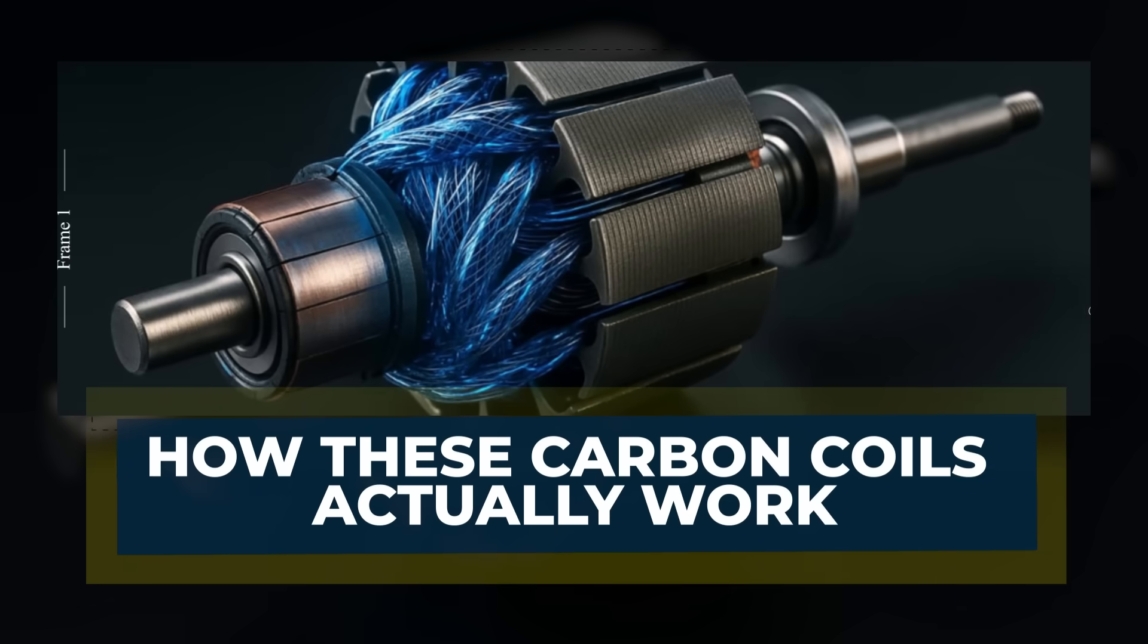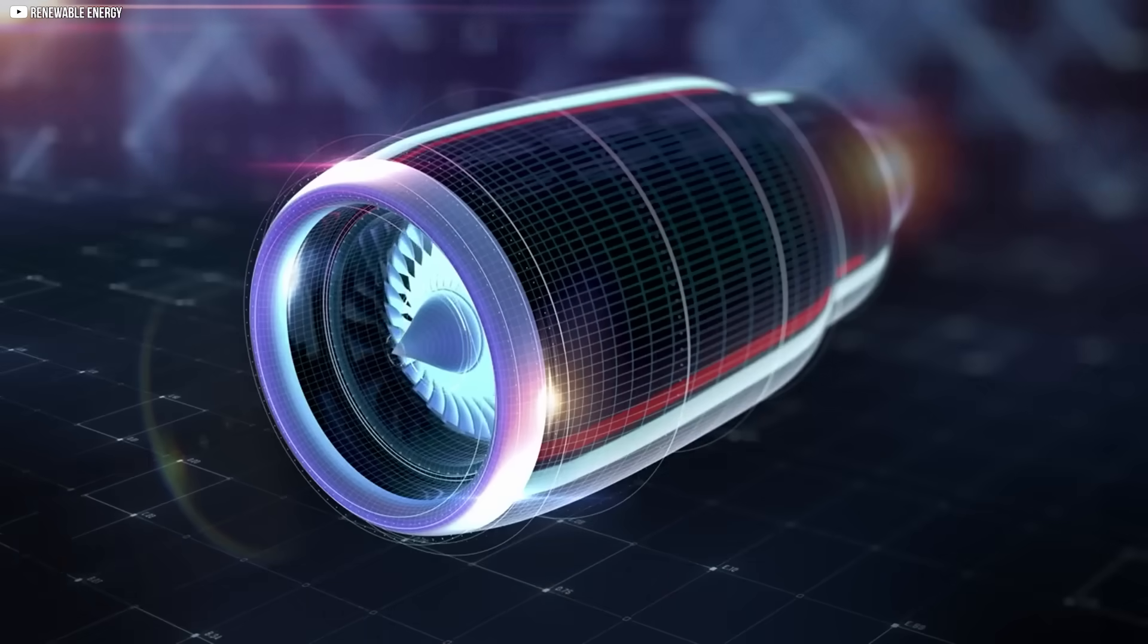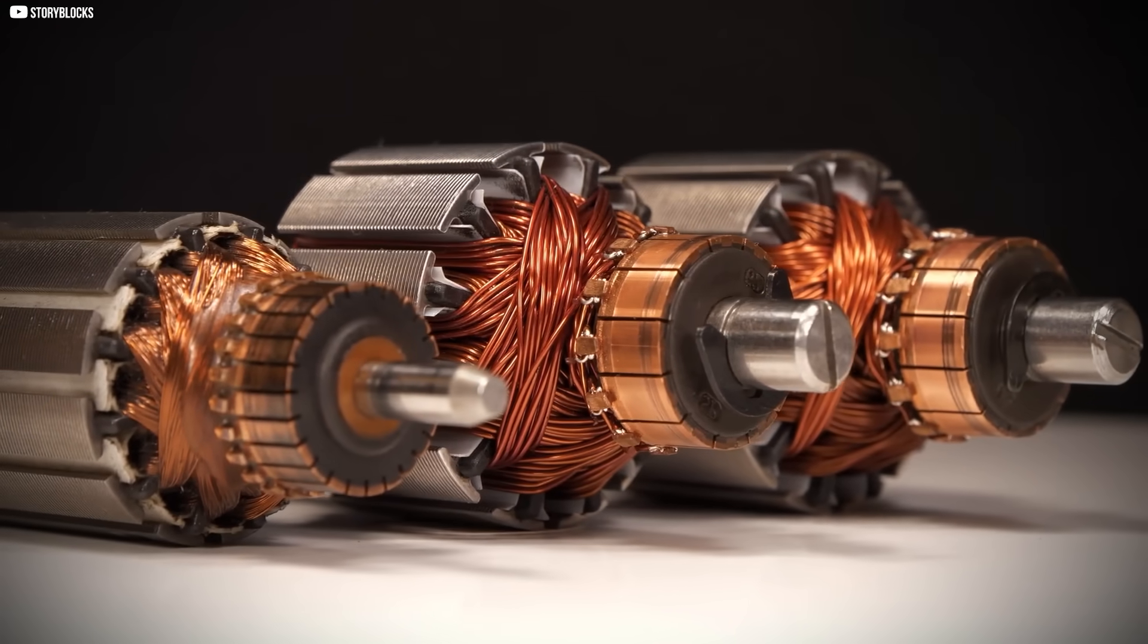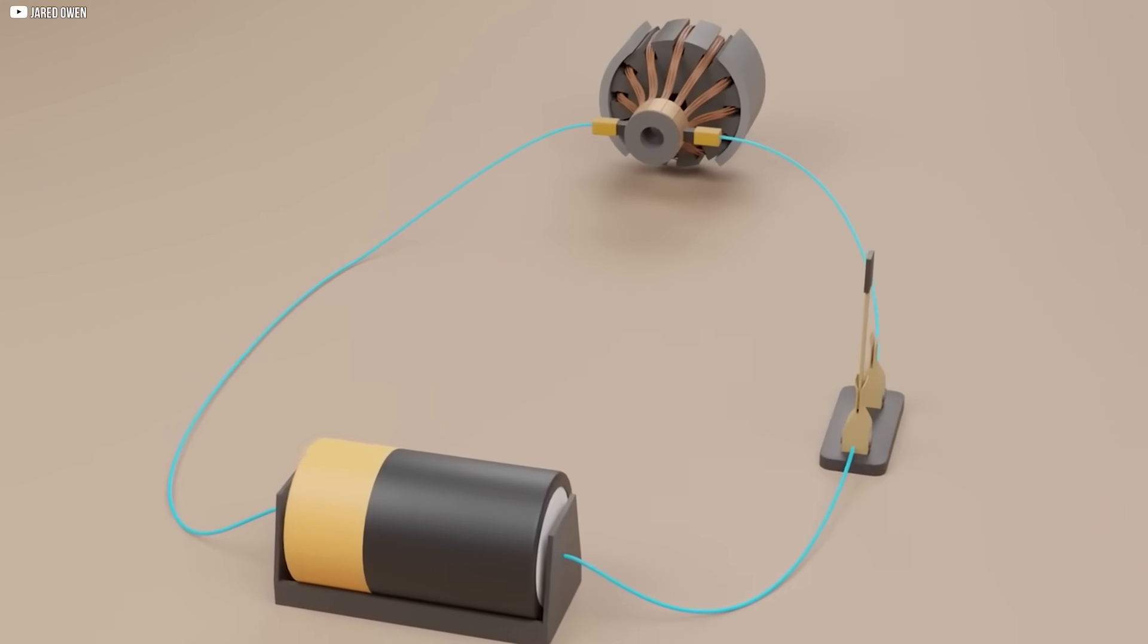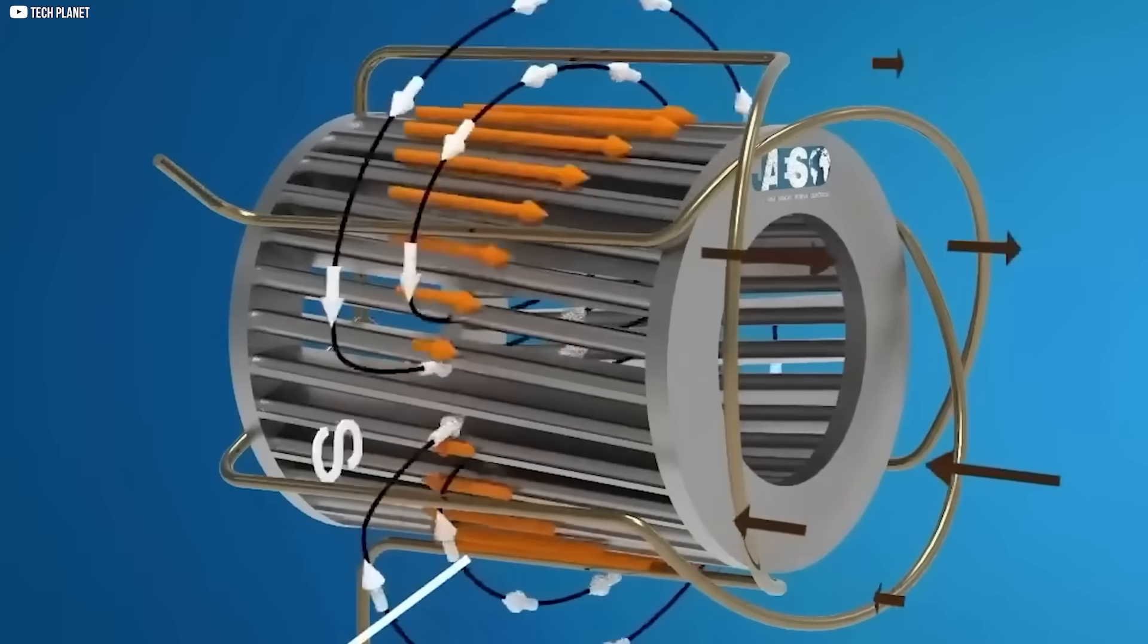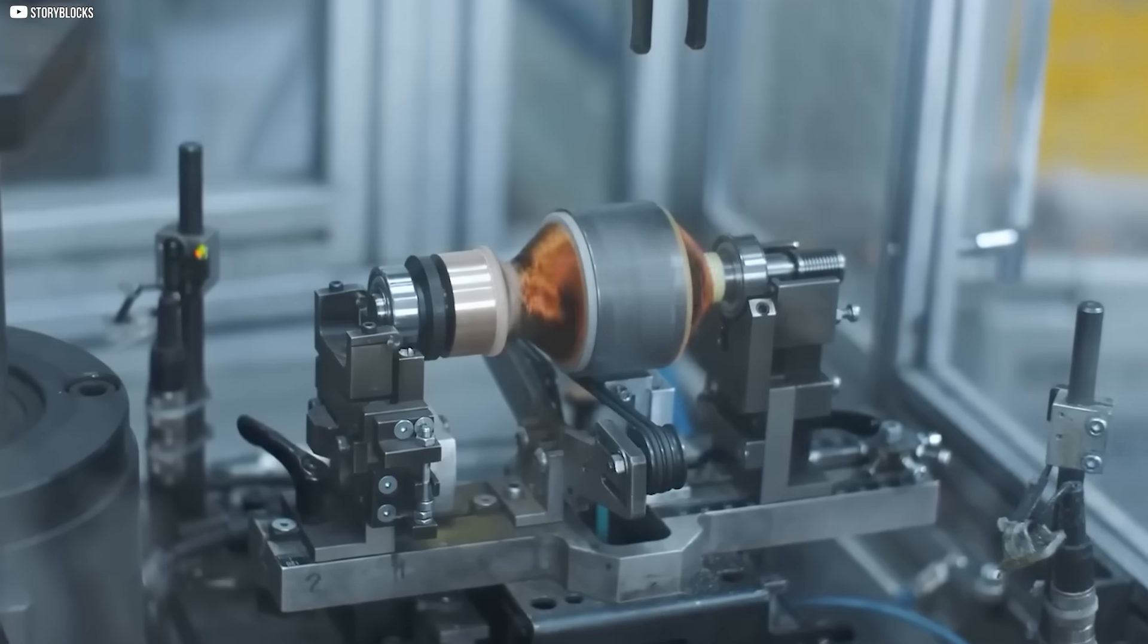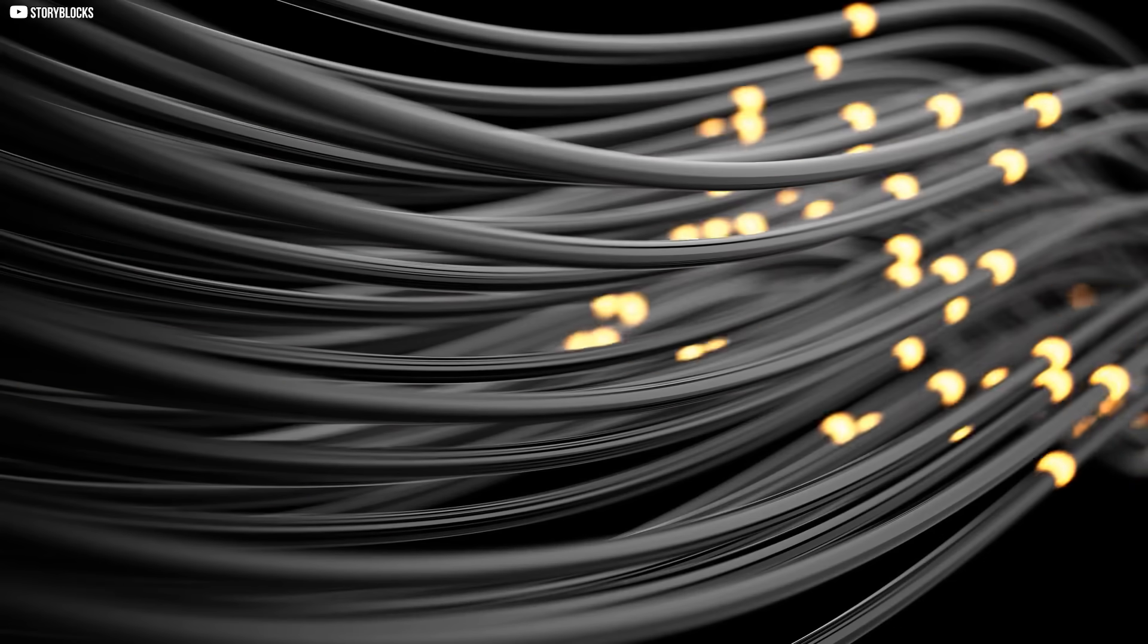How these carbon coils actually work. At first glance, it feels like a magic trick. How can a motor generate motion without metal wires carrying the current? But once you dive into the science, the answer starts to make sense. In a traditional motor, copper coils carry electric current. That current creates a magnetic field, which interacts with permanent magnets or other coils, making the motor spin. It's a simple but powerful process. With these new carbon-based coils, the fundamental physics hasn't changed. Electricity still flows. Magnetic fields still form. Motion still happens.